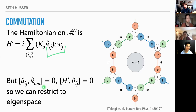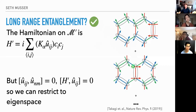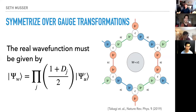As a quick side note, this is kind of like long-range entanglement. When we restrict to subspaces where these u's have a certain value, we can think of that as fluctuating bonds: if u equals one they're paired, if it's minus one they're not paired. There's a good Nature Review article that discusses this analogy.